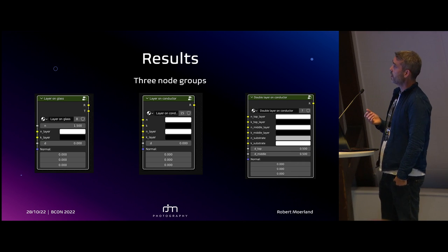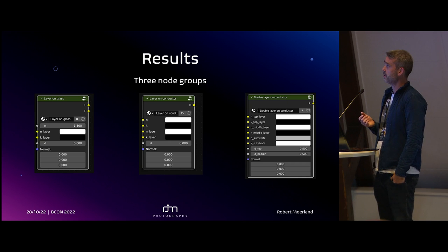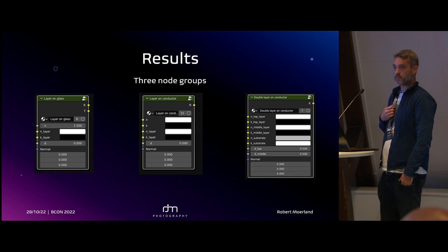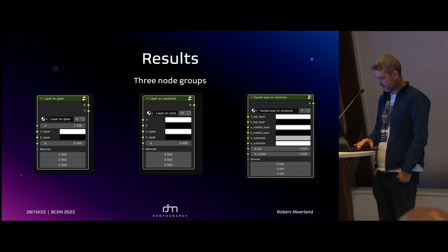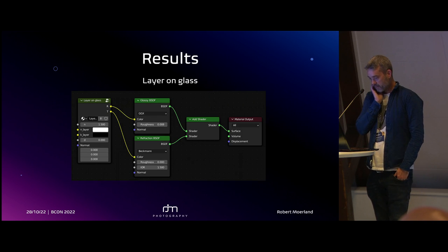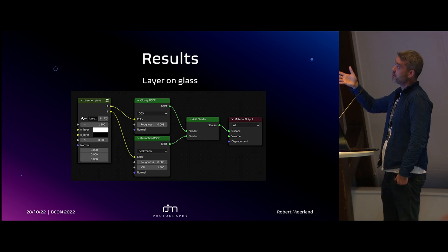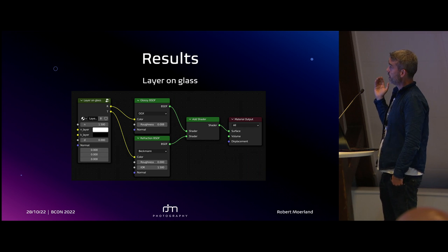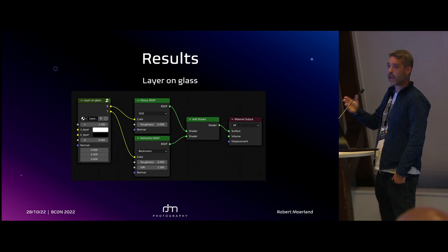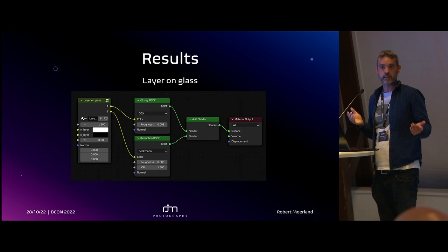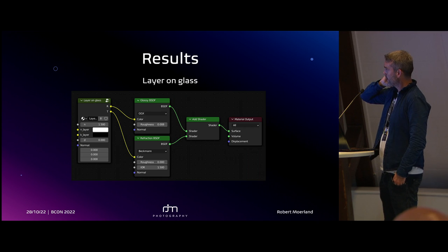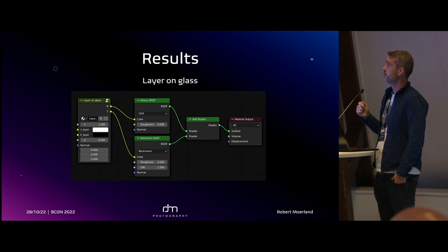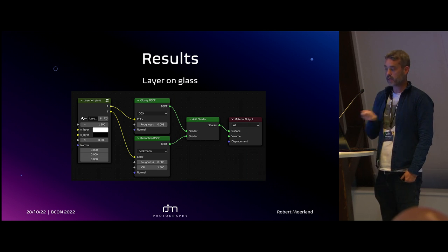The result is three node groups: on the left, a thin layer on glass; in the middle, a thin layer on a conductor, metal, or absorber; and on the right, a double layer on a conductor. For the first one — layer on glass — this is how you hook it up as a Fresnel substitute. You add a refractive index (I call it n, the physics convention for index of refraction), plus the extinction coefficient of your layer and the thickness, and the rest automatically follows.